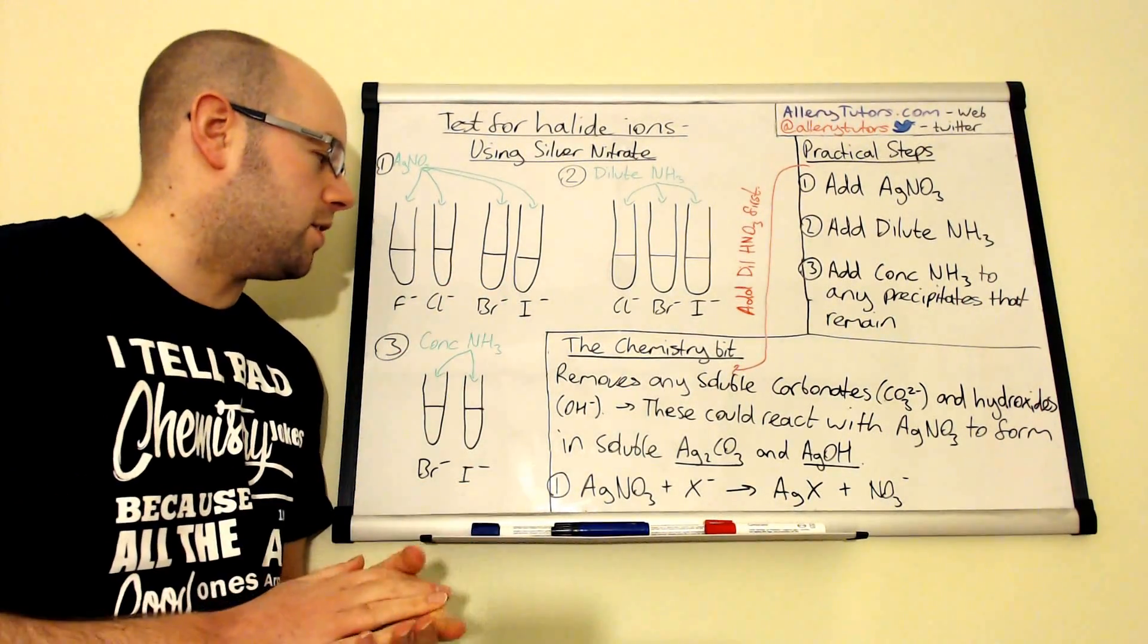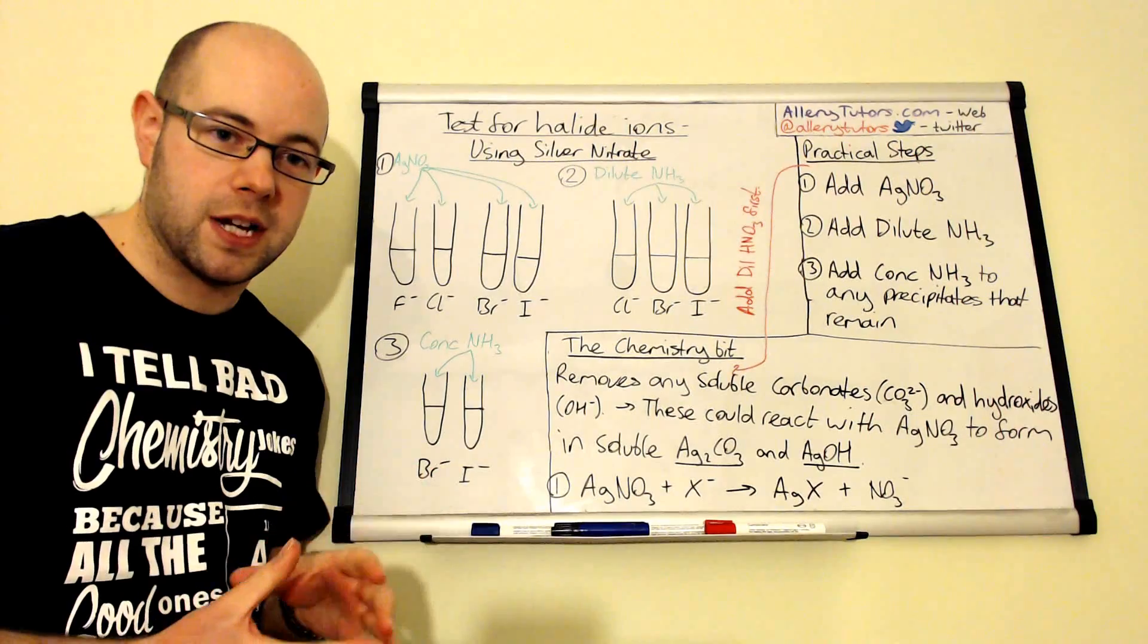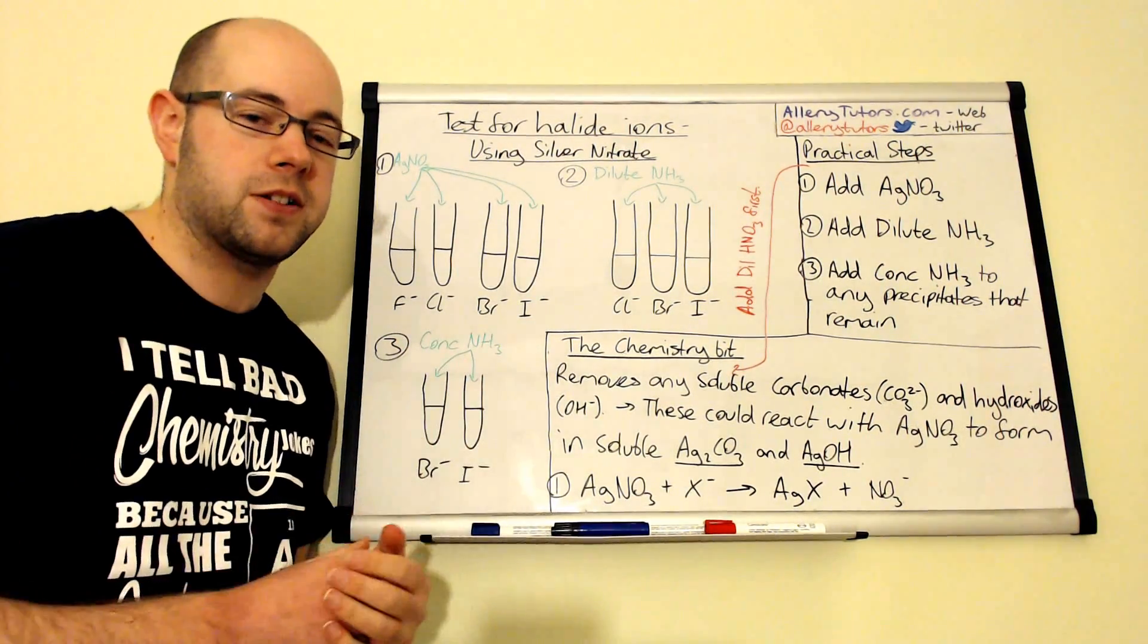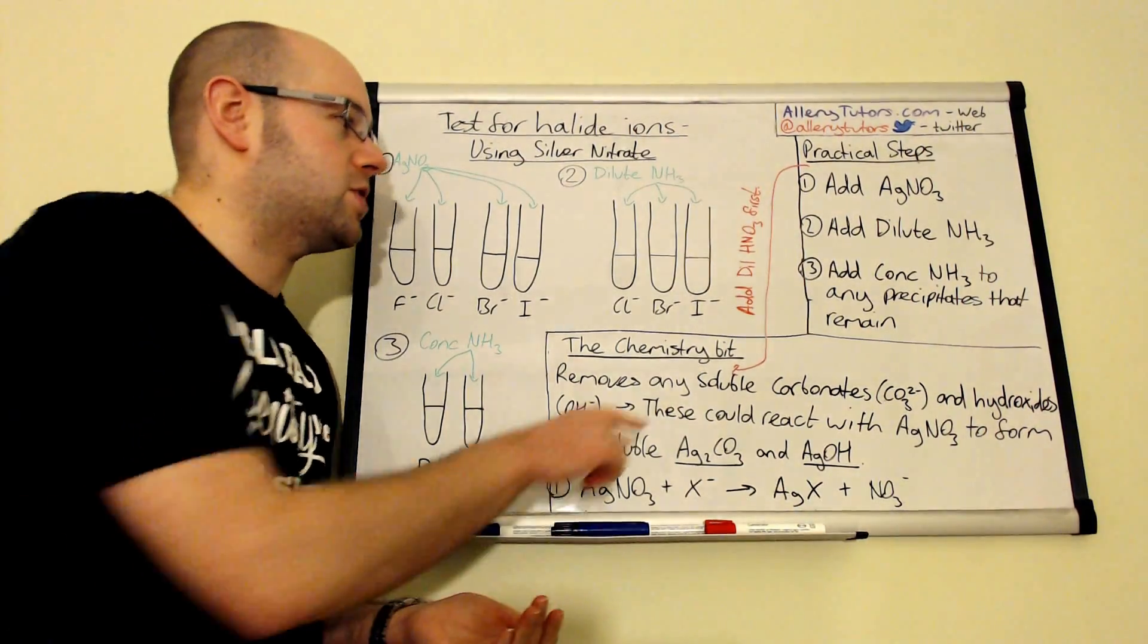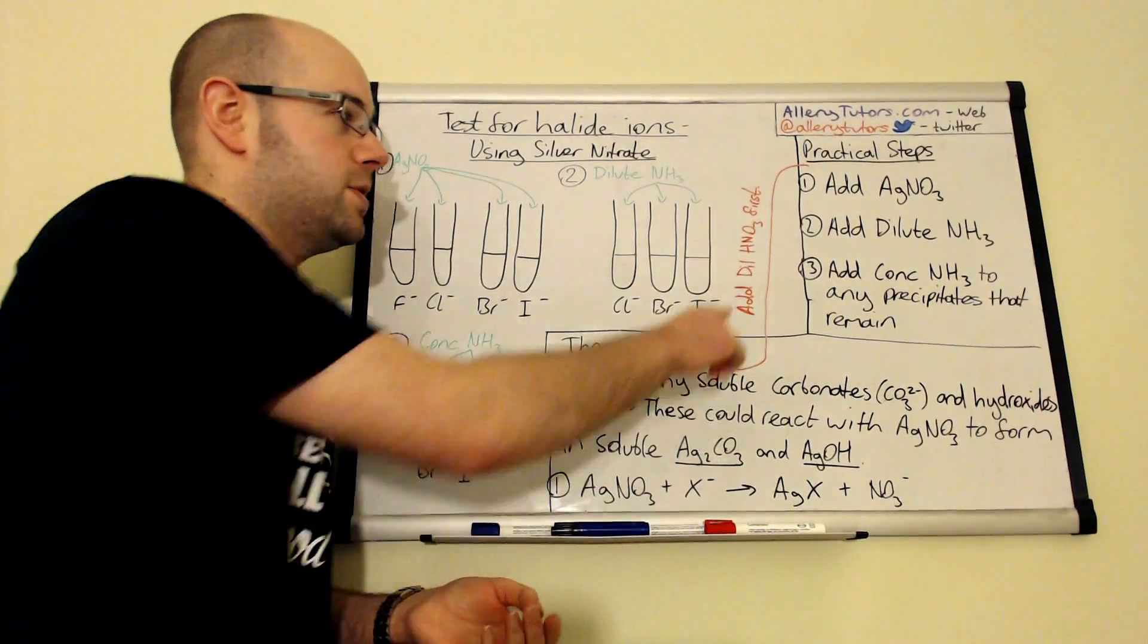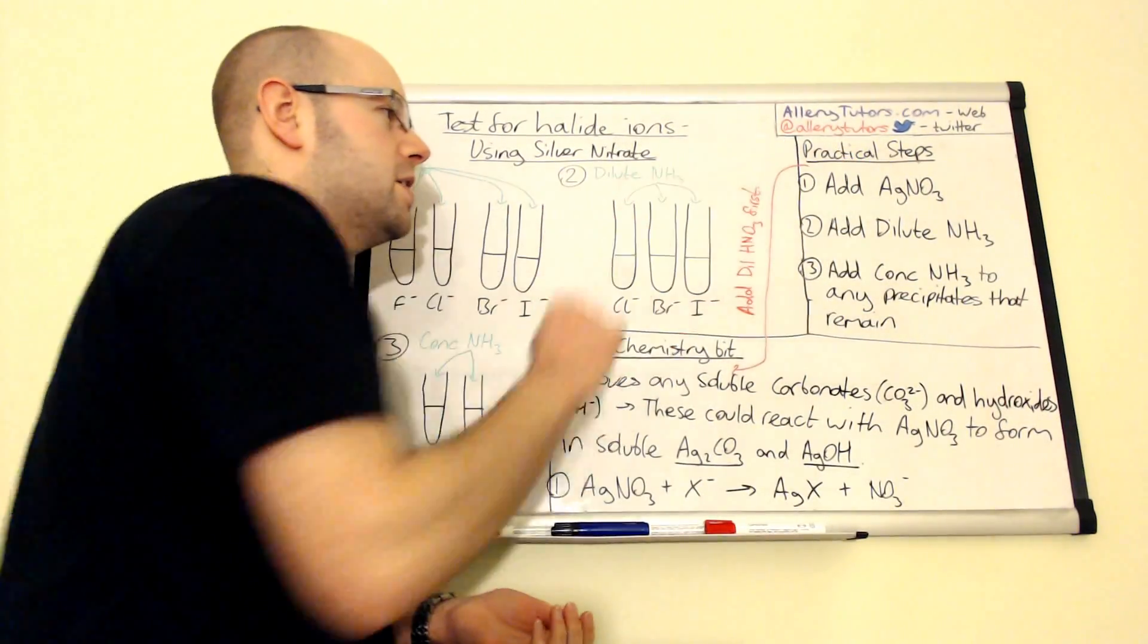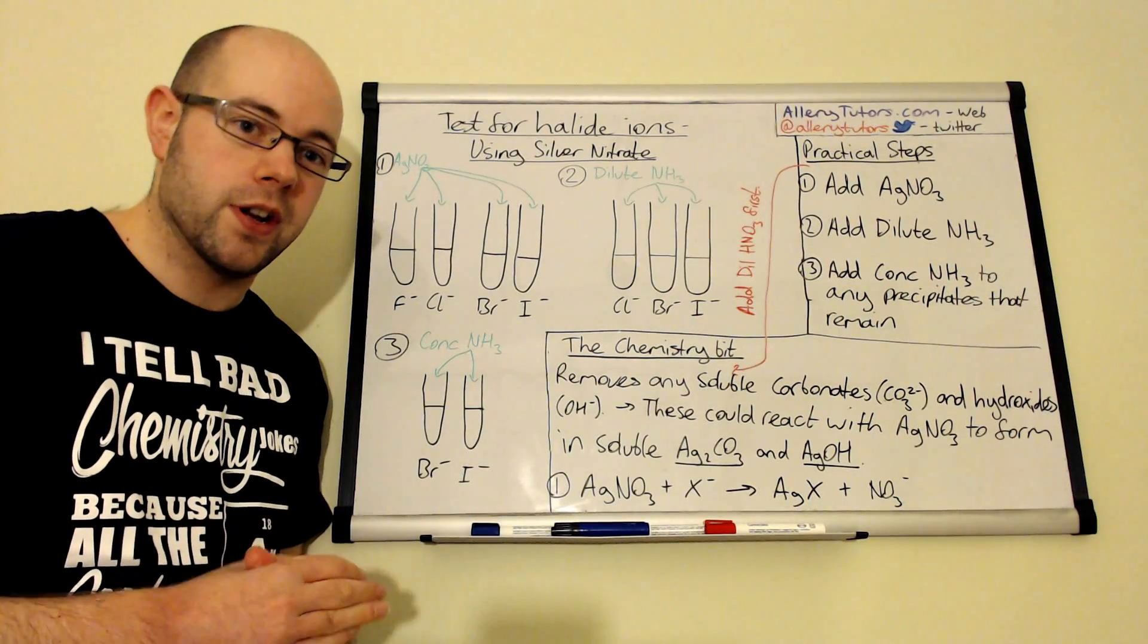We'll take our halide solutions, put them into test tubes, and you can see I've got all the halide solutions there. The first step is actually adding dilute nitric acid, which is this here. This is before we add any silver nitrate to the solution.